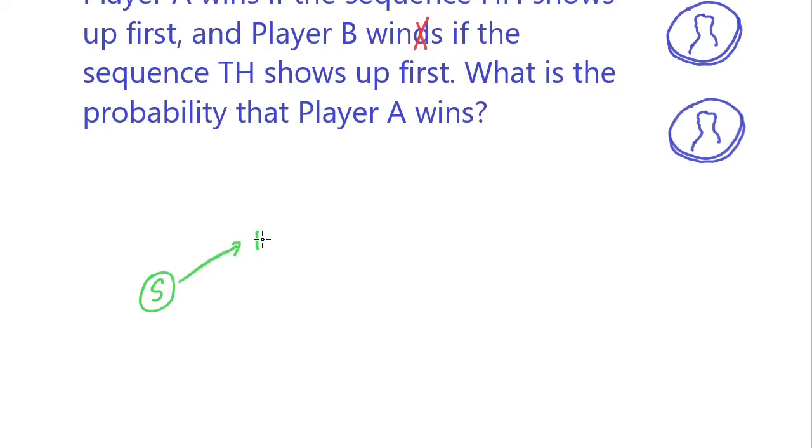We can get a head or a tail, each with one half probability. Next we can get another head, in which case we get the sequence HH and player A is going to win.